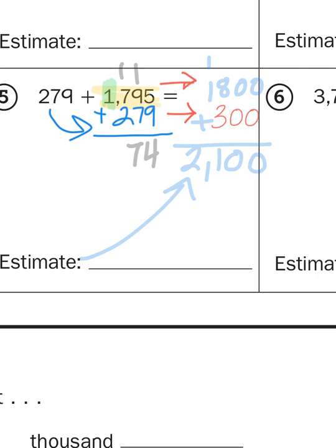Then I'm going to add 1 plus 7 plus 2. That's going to give me 10. And then I'm going to carry my 10 hundreds to the top of the thousands place value because 10 hundreds is 1,000. And then I'm going to add the thousands together. 1 plus 1 is 2. So my actual answer becomes 2,074. Which, if I round it to the nearest hundred, would also give me 2,100.